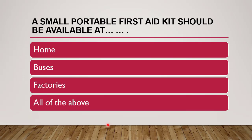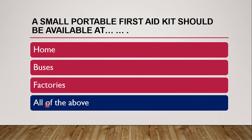Next question: a small portable first aid kit should be available at — home, buses, factories, or all of them? The correct answer is all of the above. It is mandatory to have a first aid kit at home as well as in traveling routes like buses, trains, factories, schools, colleges, etc.